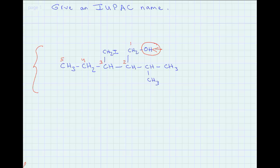Since the chain has five carbons, the base name is pentanol. The hydroxyl group is at the first position, so the base name becomes pentan-1-ol. This indicates that the hydroxyl group is on the first carbon atom of the molecule.